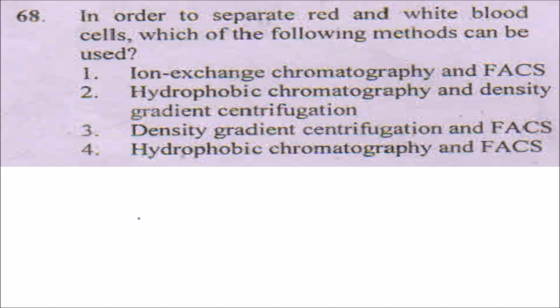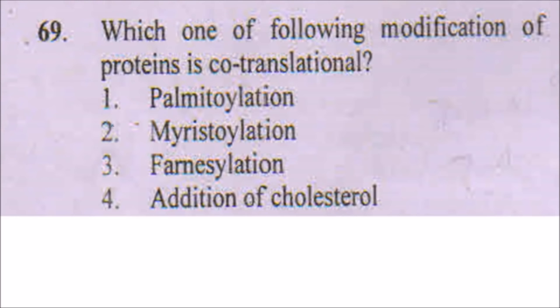To separate red and white blood cells, we will definitely use density gradient centrifugation, because red blood cells and white blood cells differ in their nucleus content — RBCs do not contain a nucleus whereas WBCs do — so they differ in density. The next question asks which modification of protein is co-translational — the only co-translational modification among the options is myristoylation.